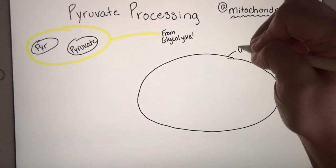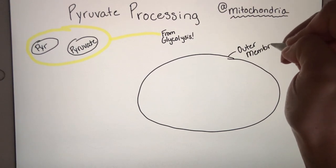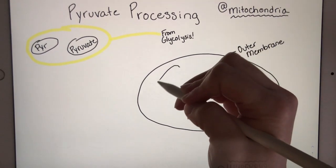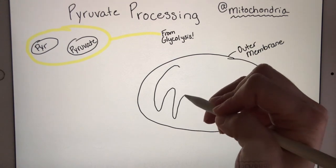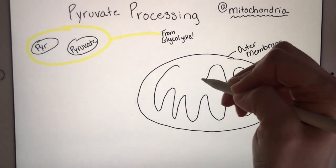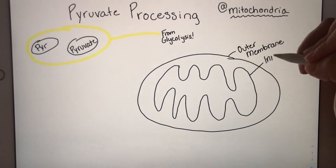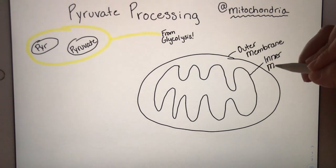The mitochondria has two membranes. One we call the outer membrane. The second one is internal, has a lot of surface area. And this, you may have guessed, is the inner membrane.